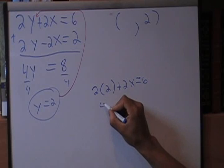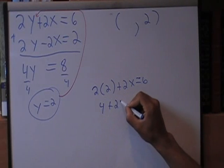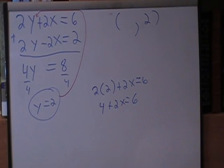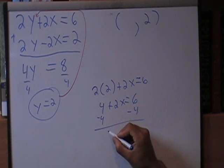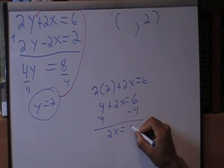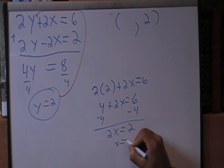2 times 2 is 4, plus 2x equals 6. Subtract 4 from both sides, and you're left with 2x equals 2, x equals 1.